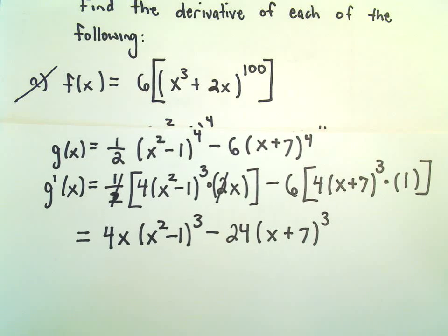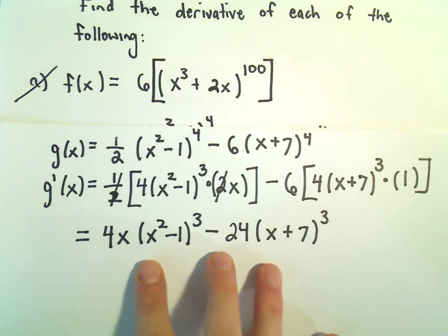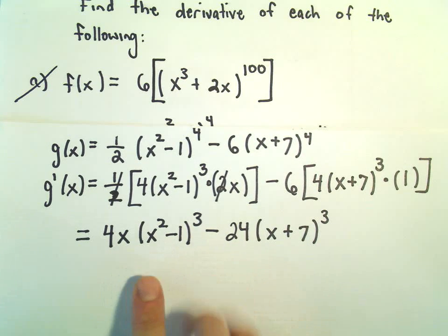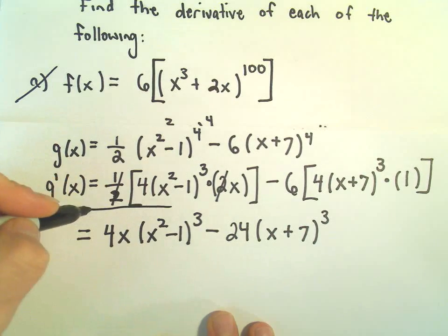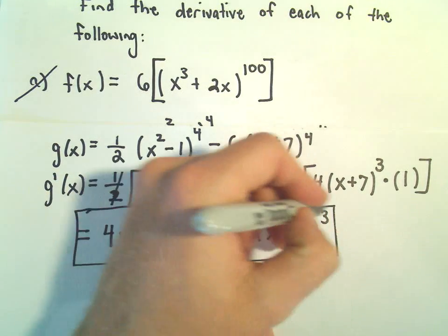And at this point, there's nothing really anymore. You could factor a 4 out, but there's no variables in common. So I would probably leave it right there, and that would be my derivative.